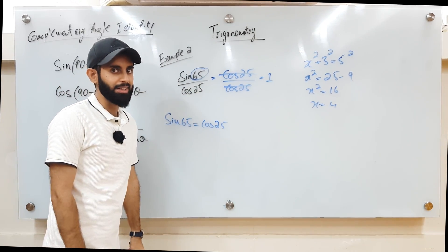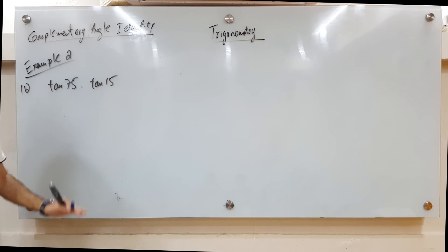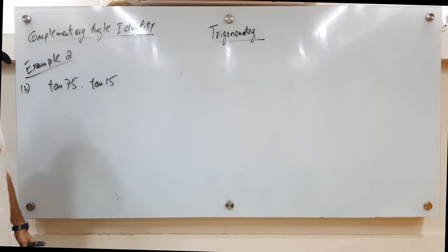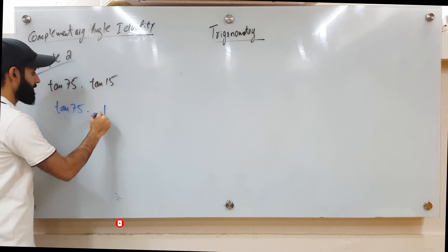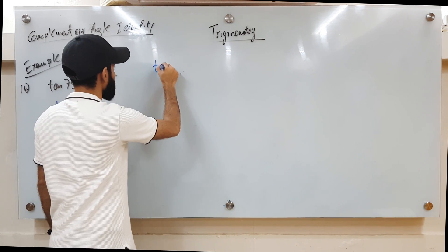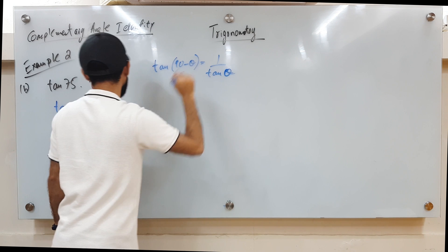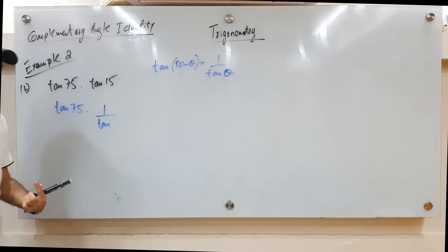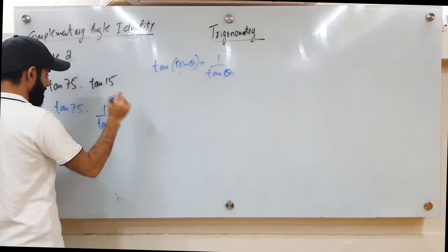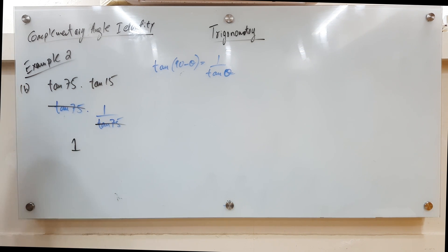Example 2b: Evaluate tan 75 × tan 15 without a calculator. Since 75 + 15 = 90°, they are complementary. Using the identity tan(90° − θ) = 1/tan θ, we can write tan 15 = 1/tan 75. So tan 75 × (1/tan 75) — the tan 75 terms cancel — giving an answer of 1.